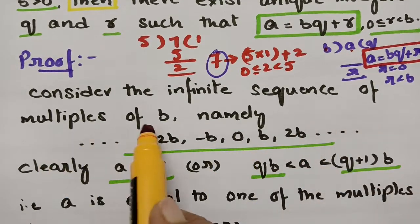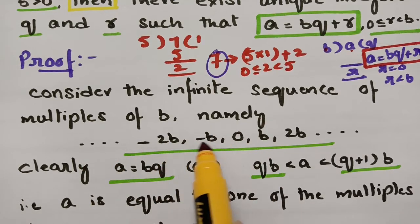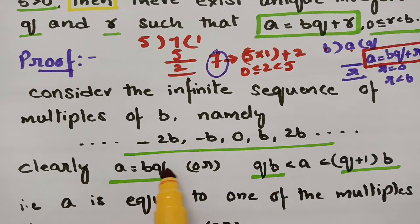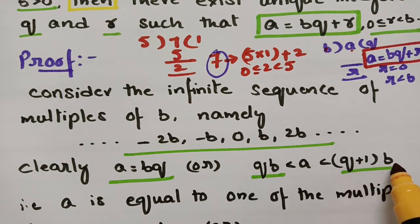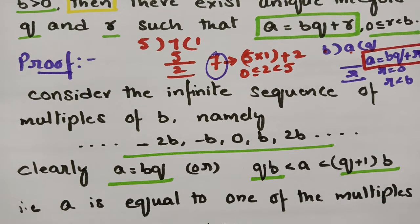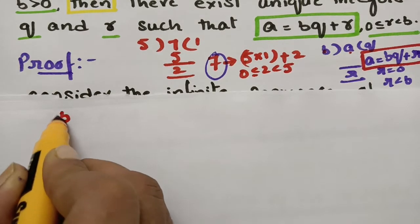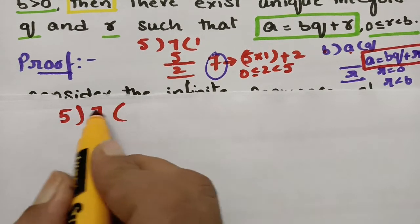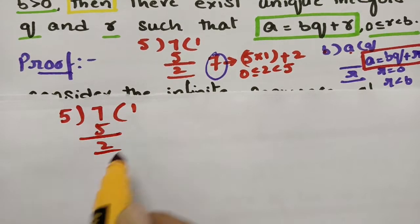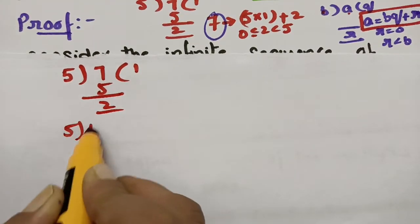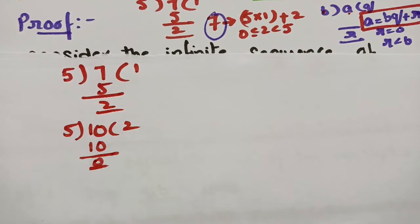Consider the infinite series of the multiples of b, namely: …, −2b, −b, 0, b, 2b, and so on. Clearly a is equal to bq, or a lies between the consecutive multiples qb and (q+1)b. I will show you a best example so that you can understand this. So with a small division example I will explain.